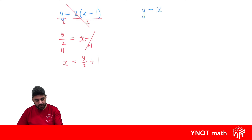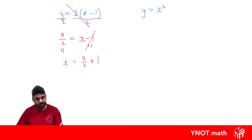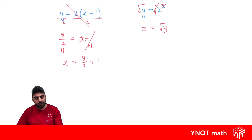y equals x squared. Currently, y is the subject, so let's make x the subject. We want to get rid of that square, so we'll square root both sides. The square and square root cancel out, so we're left with x equals the square root of y.